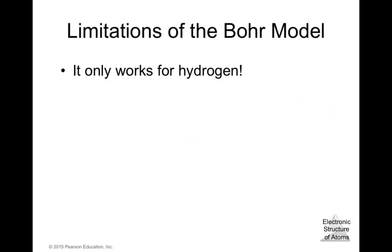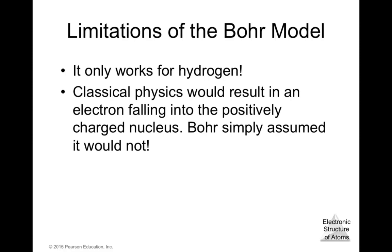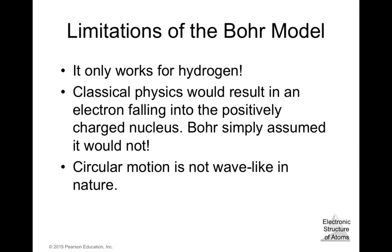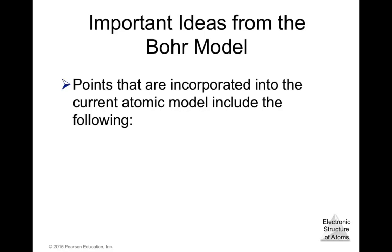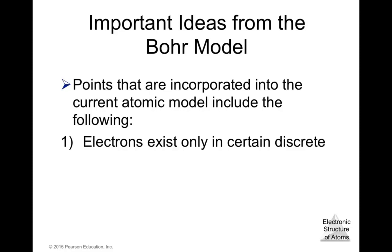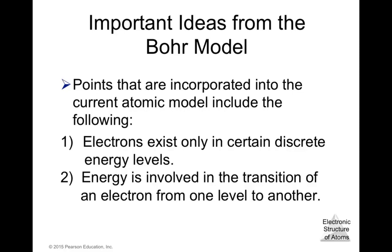This model has limitations — it only works for hydrogen. Classical physics would predict an electron falling into the positively charged nucleus, and circular motion is not wave-like in nature. However, the important ideas carried forward into the current atomic model are: one, electrons exist only in certain discrete energy levels, and two, energy is involved in the transition of an electron from one level to another.